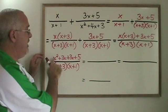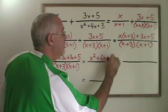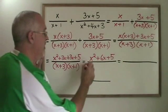Simplifying further, this combines to x squared plus six x plus five, still over the common denominator.